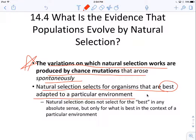It's not the best in any absolute sense — not the prettiest or fastest — but the best in the context of a particular environment. When a predator is present, the best for that environment is to be dull and not colorful. When a predator is absent, the best is to be colorful. Best adapted to the particular environment — that's natural selection.